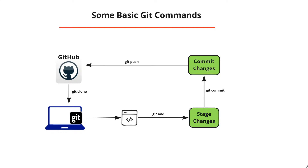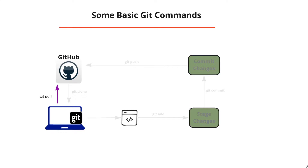Until we commit the change, the code still resides in our local repository. Then we finally use git push to push the code to the remote repository. If there are modifications made by other team members and your local repository is out of sync, we use git pull to pull the latest code so our local machine is in sync.